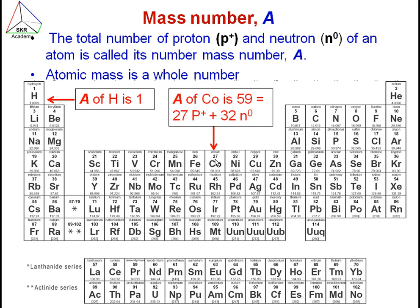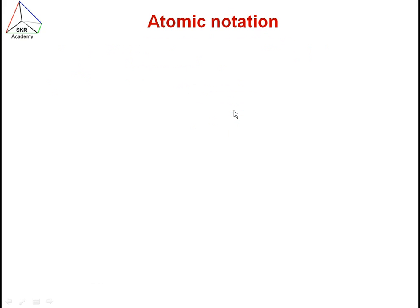The mass number of cobalt is 59, which consists of 27 protons – the atomic number – and 32 neutrons. You will see the number written as 58.933, but this is the average atomic mass, not the mass number. Mass number is always a whole number.